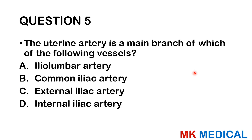Question five: The uterine artery is the main branch of which of the following vessels? A, iliolumbar artery; B, common iliac artery; C, external iliac artery; D, internal iliac artery. It's a branch of the internal iliac artery.